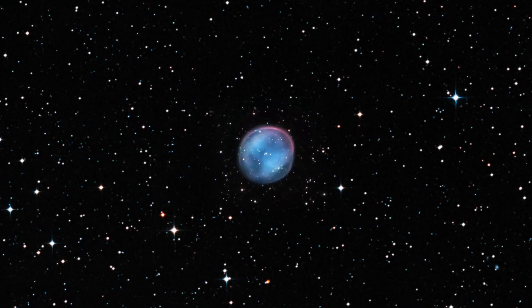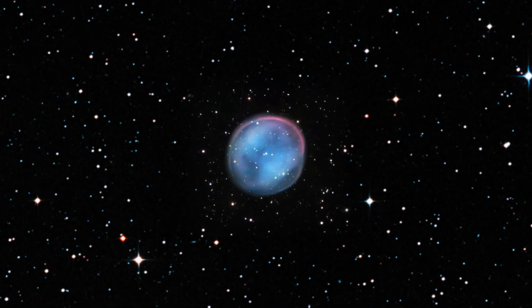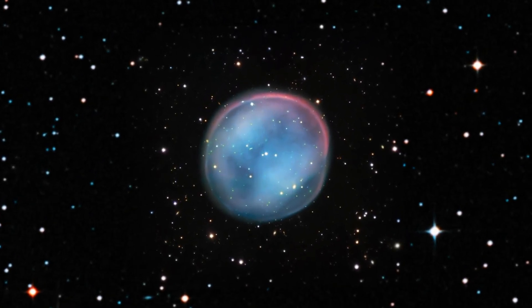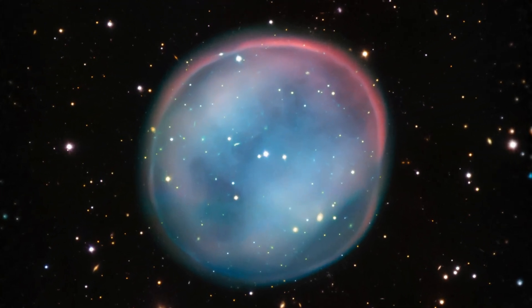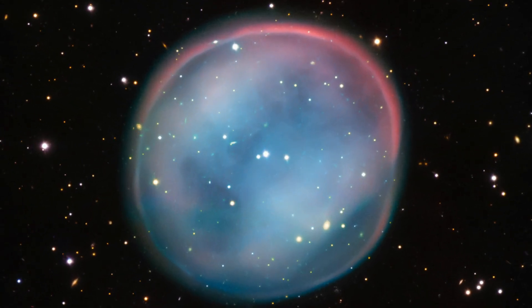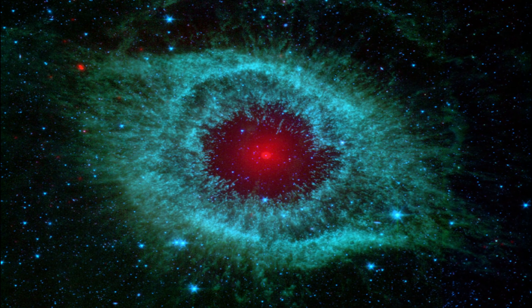The colors observed come from various elements, more or less ionized, each emitting at specific wavelengths. Hydrogen atoms emit red light, while oxygen glows green.